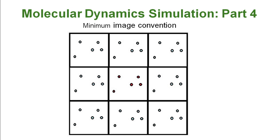In a periodic boundary condition, we replicate the simulation box in all directions of the original simulation box. Therefore, the image copies of the central simulation box surround the central simulation box or central particle.